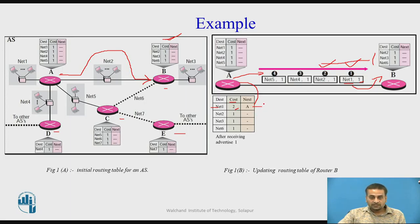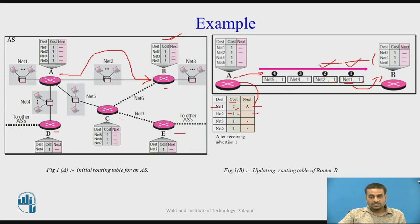When it receives the second update, router B checks its updated routing table for net2. Since net2 is already present and the advertised cost equals the cost already in the routing table, router B will not update or add this entry.